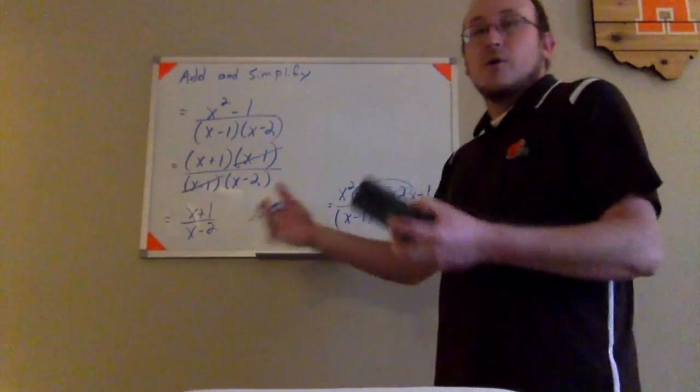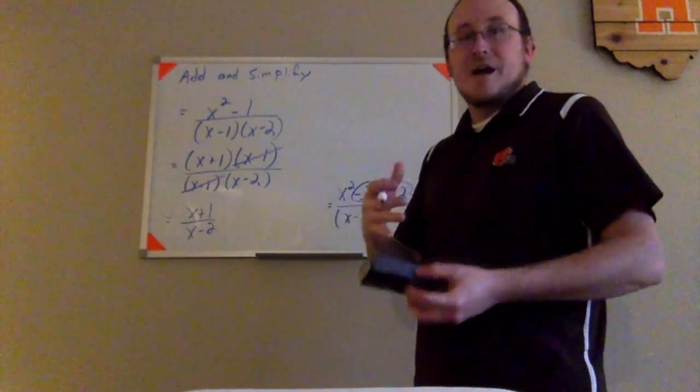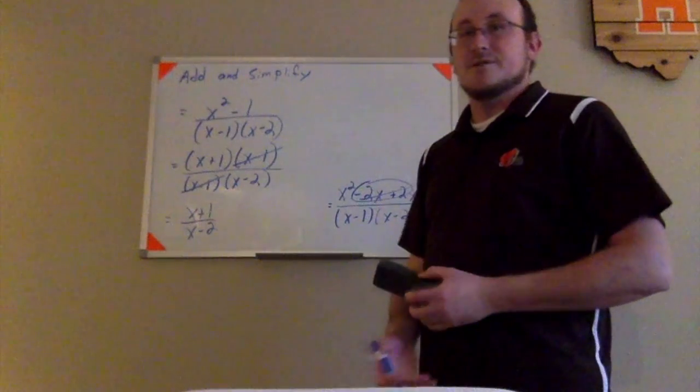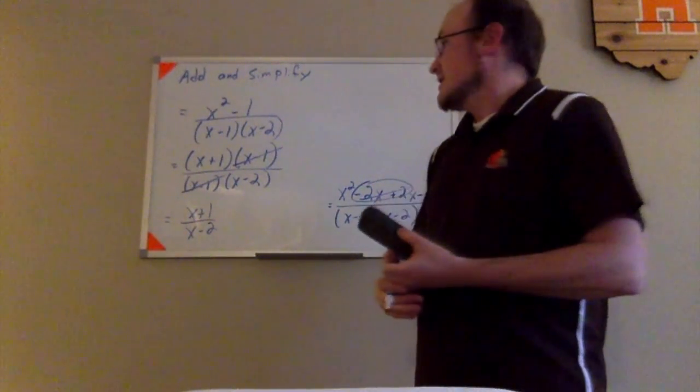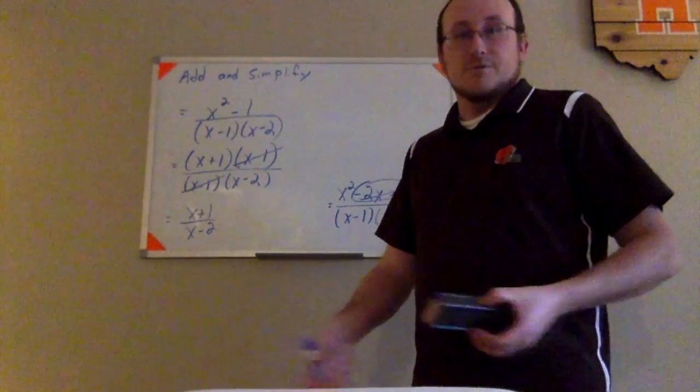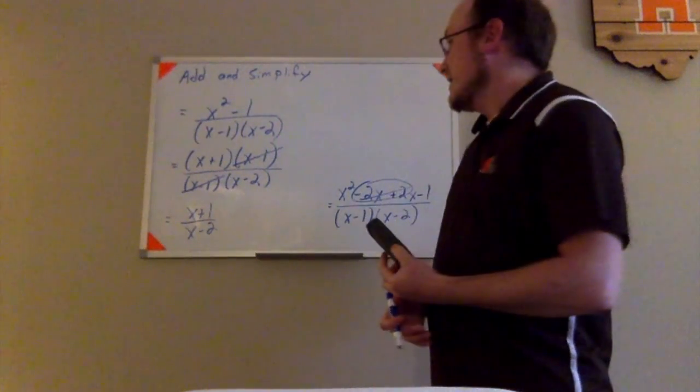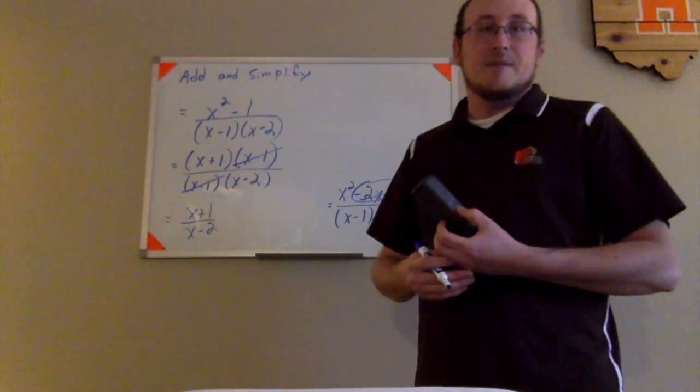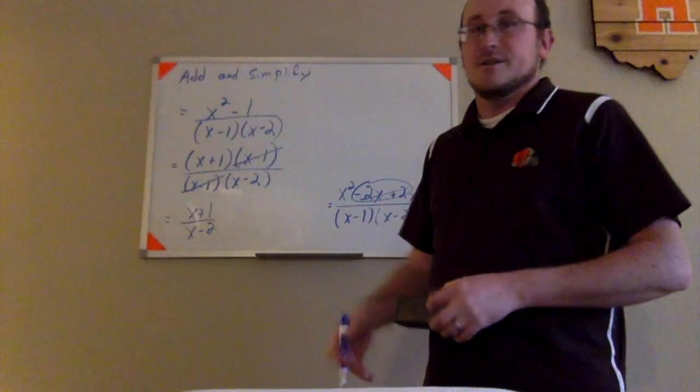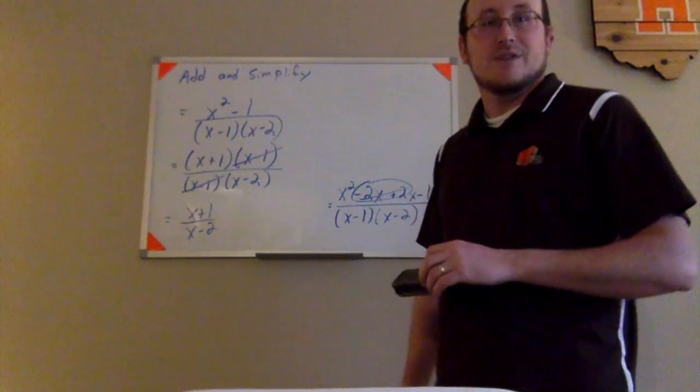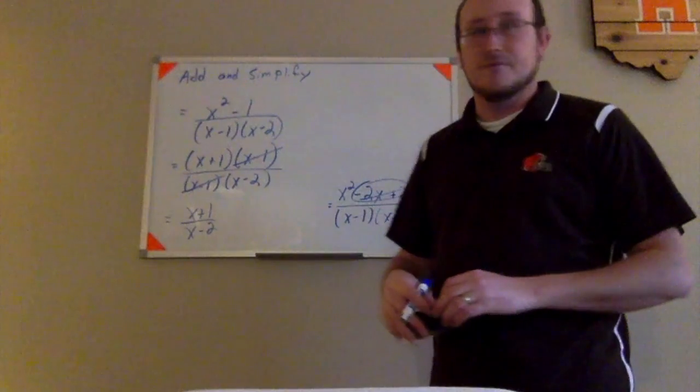Sometimes you have to multiply both fractions by certain factors to be able to get common denominators, so it could be a little bit more work than that. Sometimes the numerator isn't factorable, so it doesn't simplify any further. And you could go ahead and multiply out your denominator if you wanted, or you could leave it. It doesn't matter as long as there's no factors that can cancel out, then it's considered simplified.